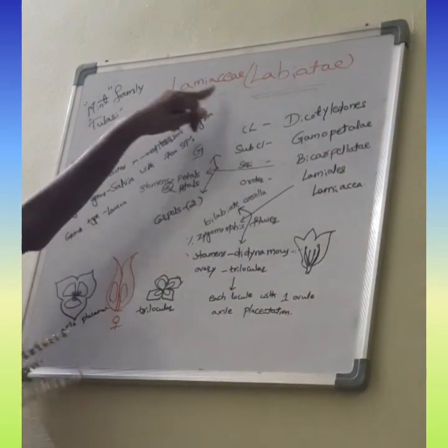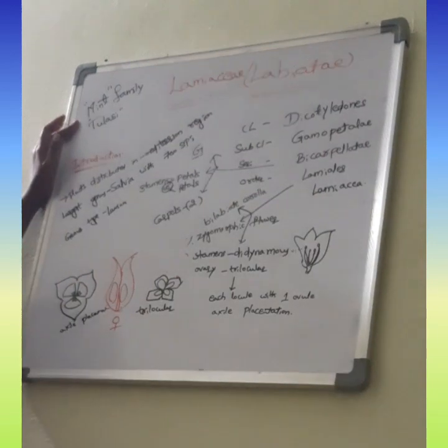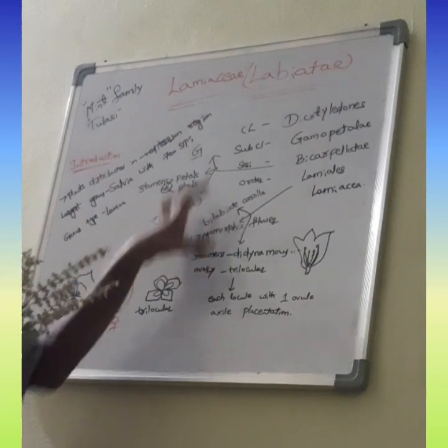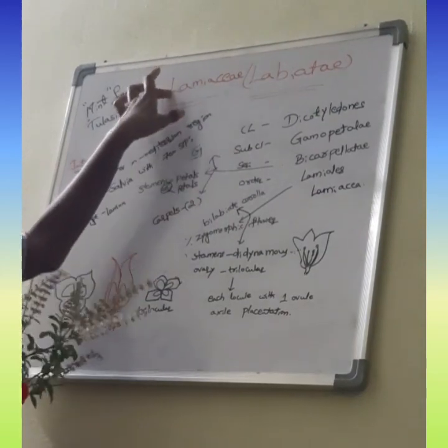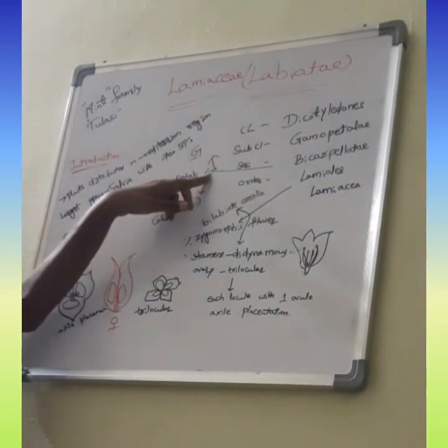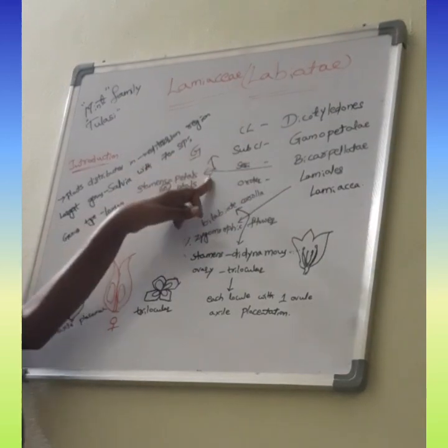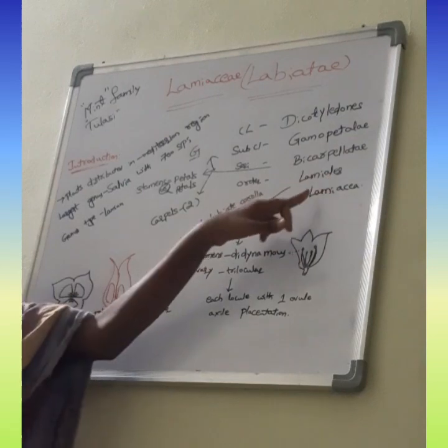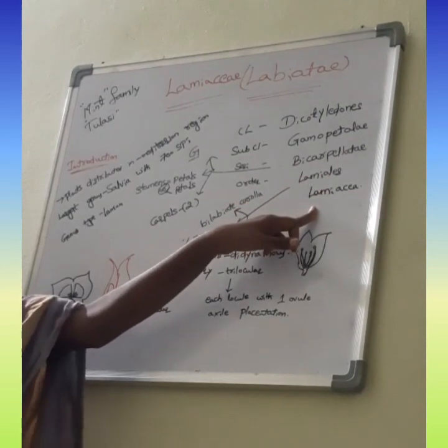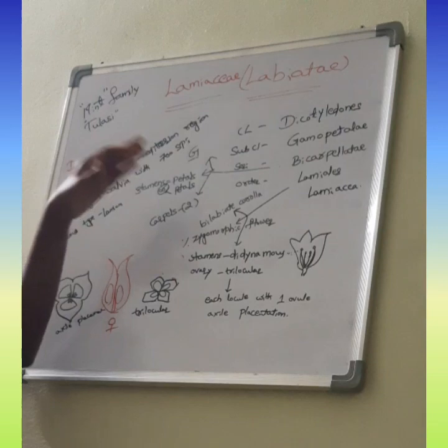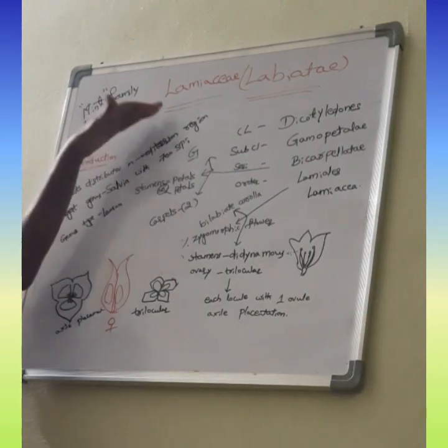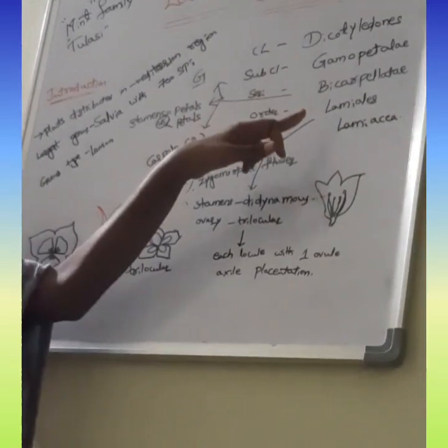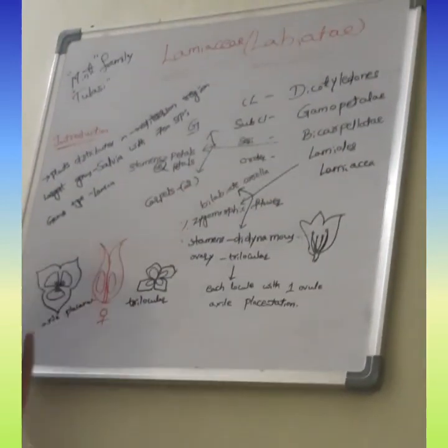The best example for the LAMIAC family is TULASI or MINT. Then I will discuss about the classification of this family. Class is DICOTYLEDONEAE, subclass is GAMOPETALAE, series is BICARPELLATAE, order is LAMIALES, family is LAMIACEAE. I will discuss why this family is kept in particular series of BICARPELLATAE and particular order of LAMIALES.